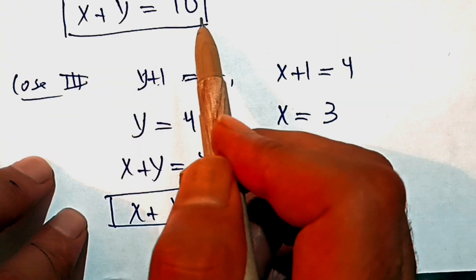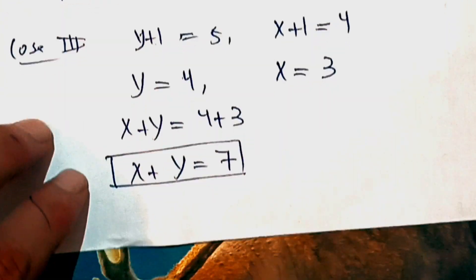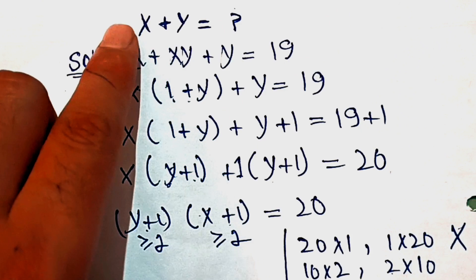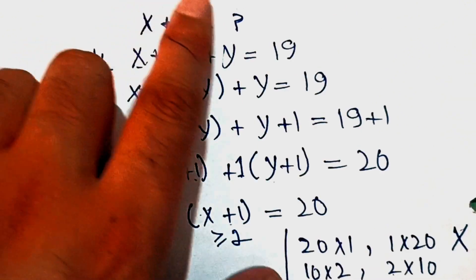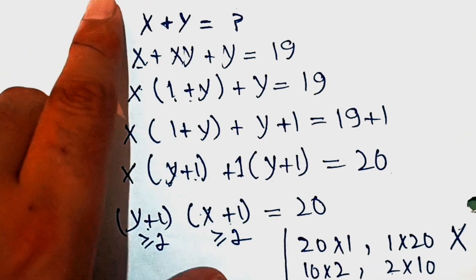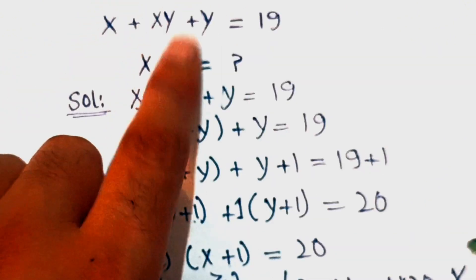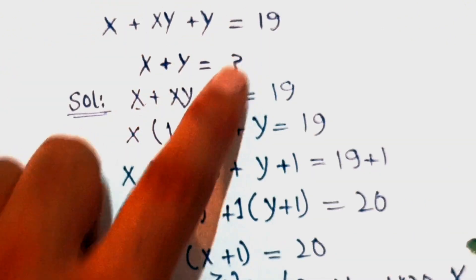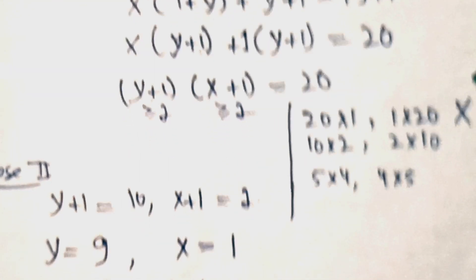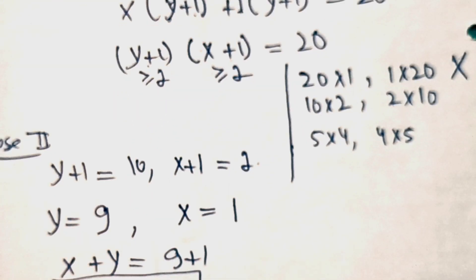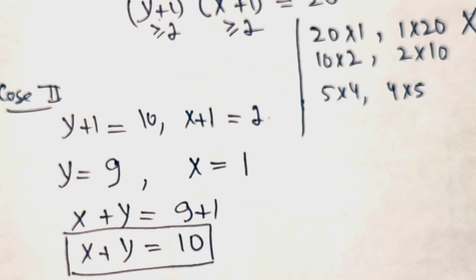So we have two solutions: x plus y is either equal to 10 or x plus y is equal to 7. You can verify this by substituting back into the original equation. Thanks for watching — don't forget to subscribe. See you in the next video, take care, bye bye.